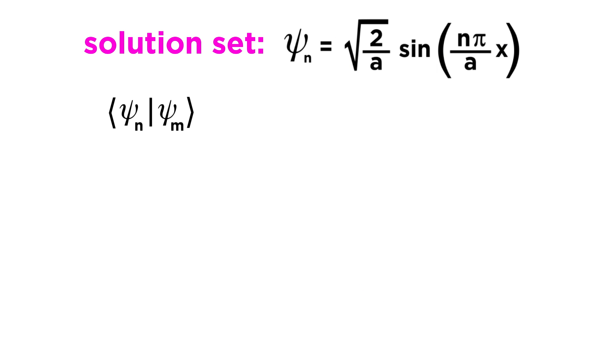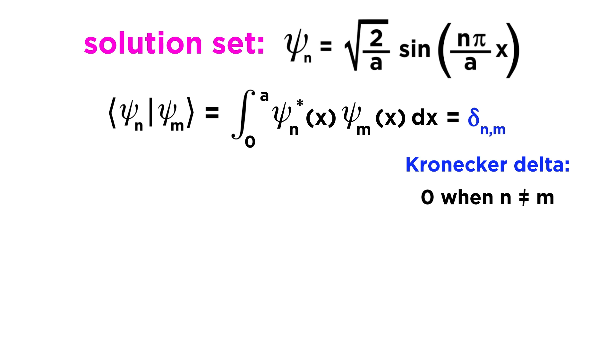Here the subscripts are simply referring to different wavefunctions. So if n equals 1 and m equals 2, the inner product of psi 1 and psi 2 equals delta 1 comma 2, which equals 0, since these are two different wavefunctions from the solution set and are thus orthogonal, so their inner product must be 0. But if n and m both equal 2, then the inner product of psi 2 with itself will equal delta 2 comma 2, which equals 1, since the inner product of any wavefunction with itself must be 1. Let's go ahead and make sure that the wavefunctions in our solution set satisfy this condition.